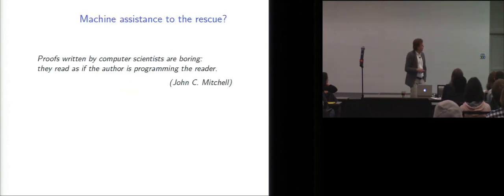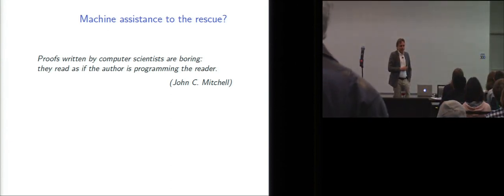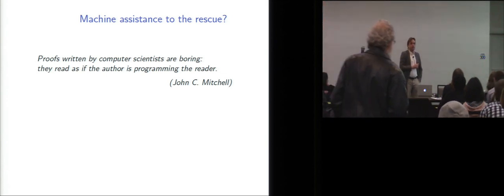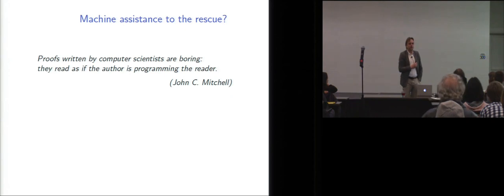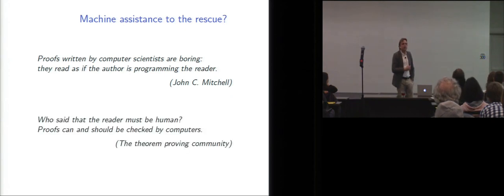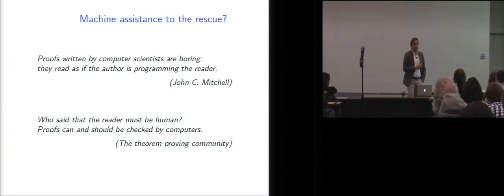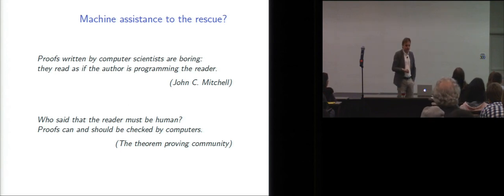Well, so I love this quote of John Mitchell. So he quipped to me once that proofs written by computer scientists are boring, because they read as if the author is programming the reader. But maybe that's the solution, actually. Who says the reader should be human, OK? Or maybe there can be two kinds of readers, human ones and computers. Maybe we can have computer assistance to check, or maybe even develop some of those proofs. And that's what the theorem proving community has been telling us for decades, OK? And we only started to listen to them.